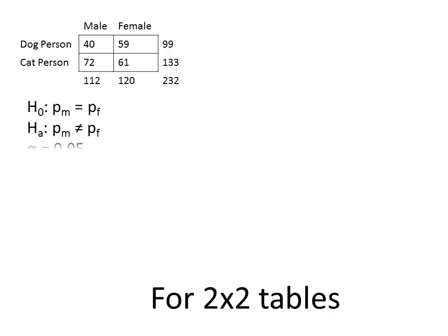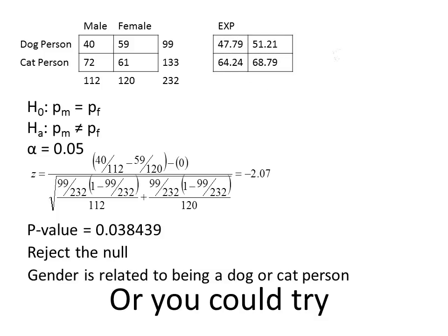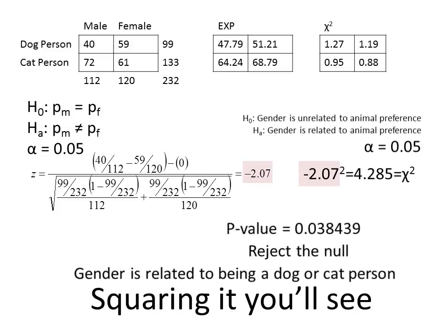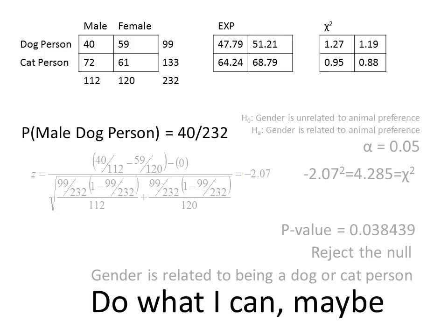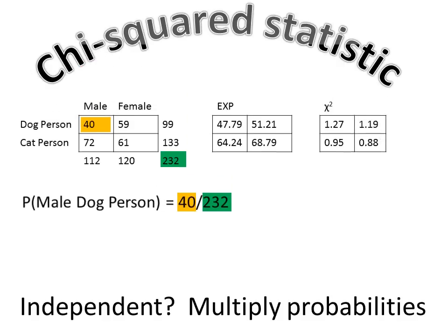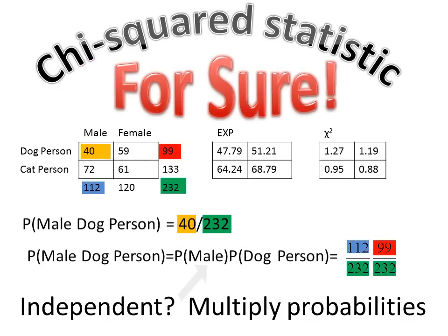For two by two tables use these, or you could try squaring it — you'll see. Do what I can, maybe, kind of squared statistic, for sure. Independent — multiply those probabilities.